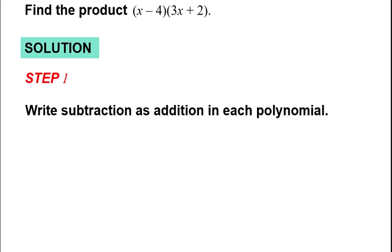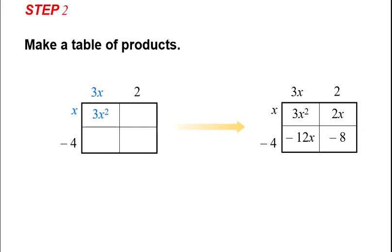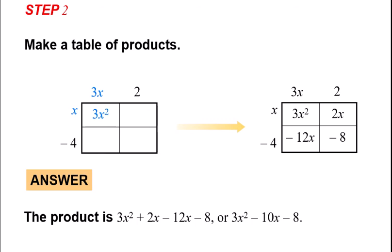Step 1: write subtraction as addition of each polynomial, so I change that x minus 4 to x plus negative 4. Step 2: make a table of products. This is one additional approach — you can write the entire polynomial on one side, and then the next polynomial on the other side, like x minus 4 and 3x plus 2, and use this Punnett square idea to multiply. So 3x times x is 3x squared. Then I take that table, add all the terms together, combine like terms, and get 3x squared minus 10x minus 8, because I added that 2x and that negative 12x together.